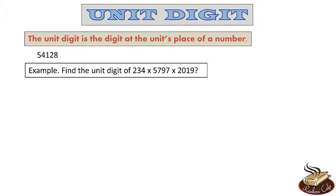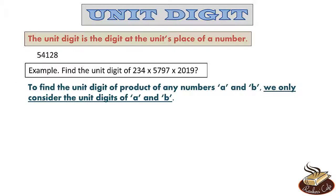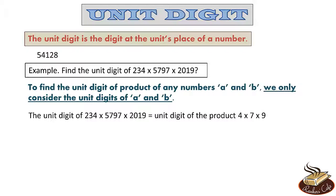But what if we need to find the unit digit of a number given as a product? Let's say a product of 234 × 5797 × 2019. Do we first need to find the value of the product and then find the unit digit? The answer, much to your relief, is no. To find the unit digit of a product of any numbers A and B, we only consider the unit digits of A and B. So we only need to consider the unit digits of 234, 5797, and 2019, which are 4, 7, and 9 respectively. So the unit digit of the product is the unit digit of 4 × 7 × 9.